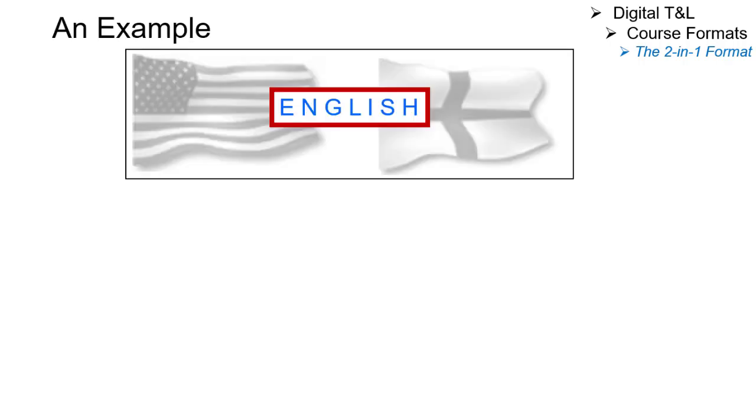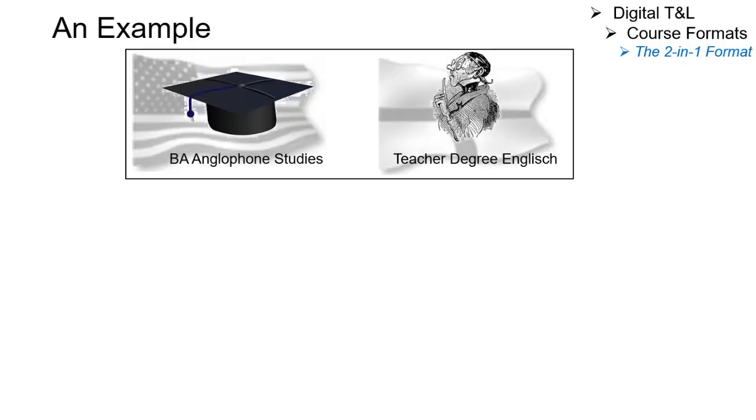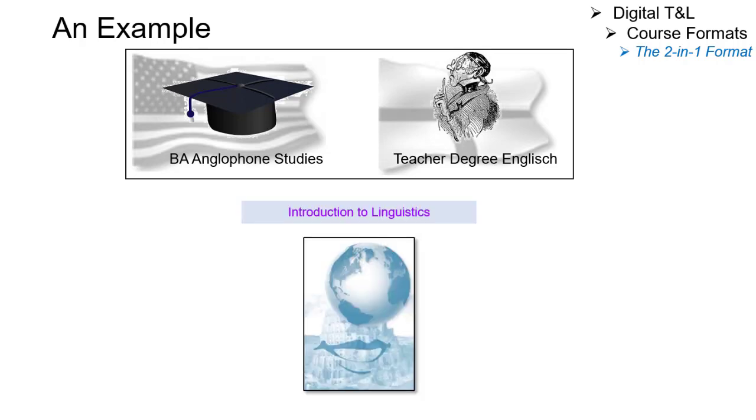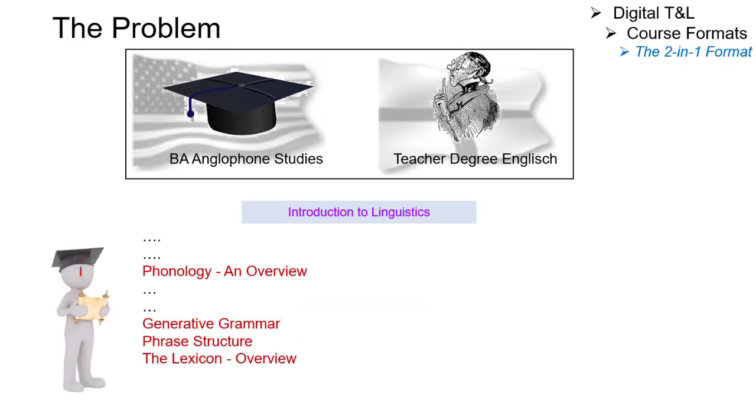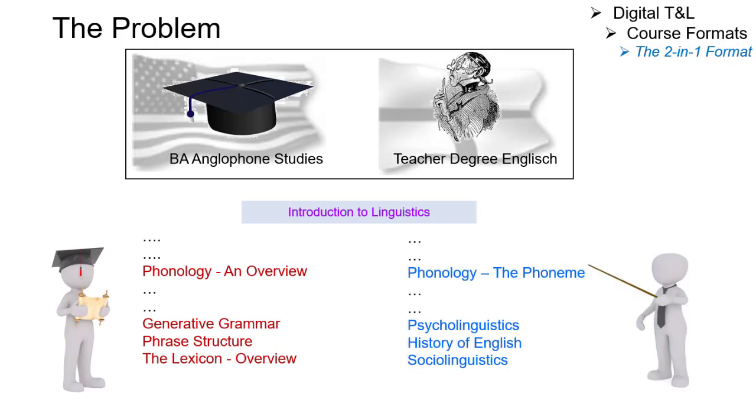In a subject such as English there is usually a BA and a teacher's training course. Both require an Introduction to Linguistics class, but with slightly different content. While the bachelor's program is more job-oriented and also creates the theoretical prerequisites for a master's program, the teacher training program is strongly oriented towards the school curriculum.